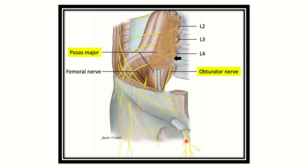In another picture, we can see the psoas major muscle. Within the psoas major muscle, there is a nerve plexus — the lumbar plexus. The lumbar plexus is located within the psoas major muscle. From it arises the obturator nerve, which originates from the anterior divisions of lumbar 2, lumbar 3, and lumbar 4.